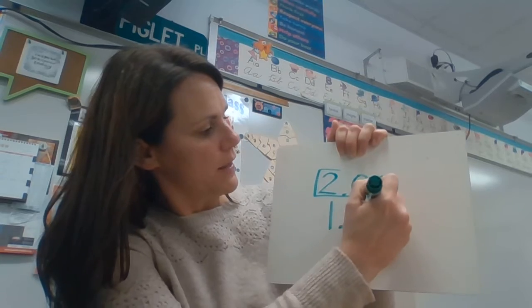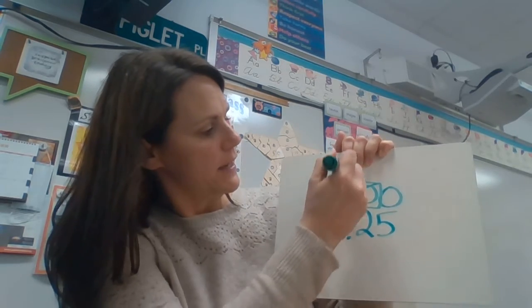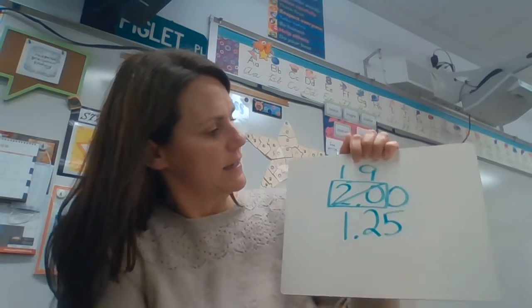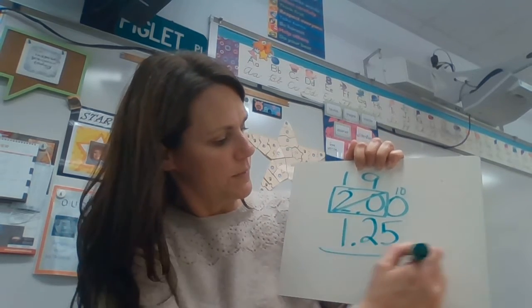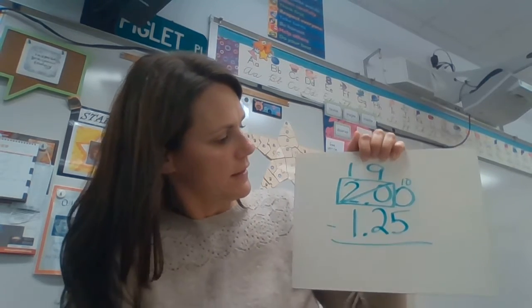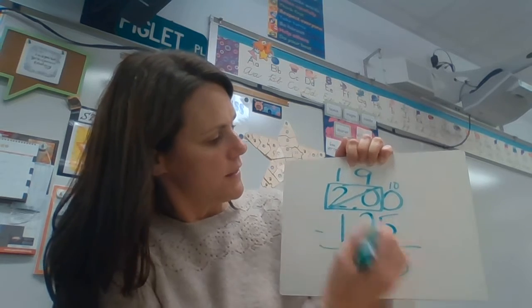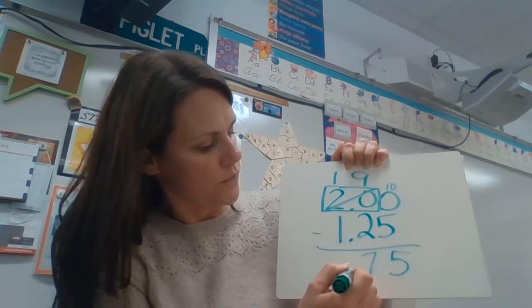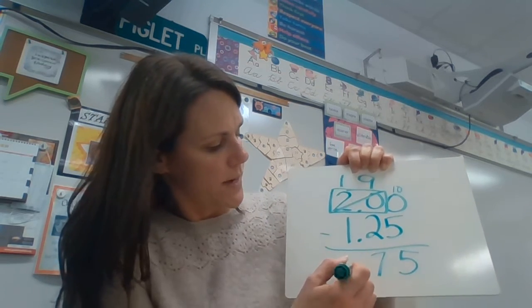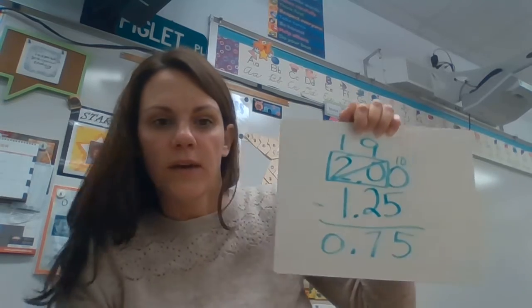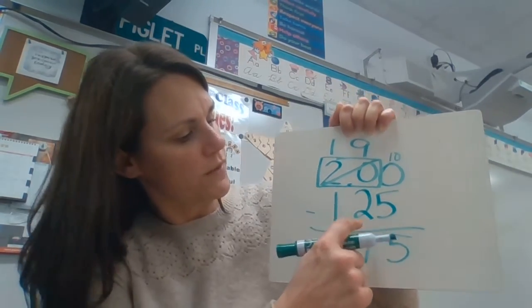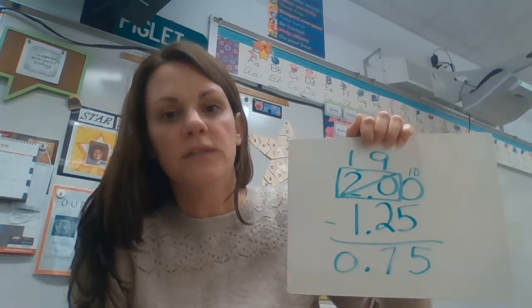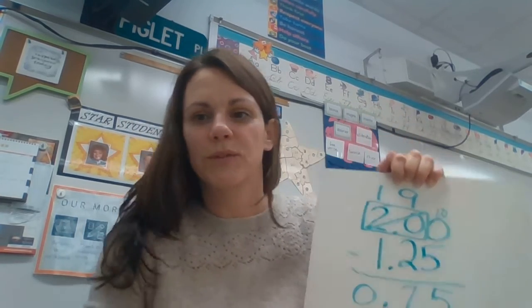Box around the 2, make it a 1, the zero becomes a 10. Ten minus five, nine minus two — drop the decimal — one minus one. There it is: 75 cents change. You can check: $1.25 plus another 75 cents will give you two dollars.